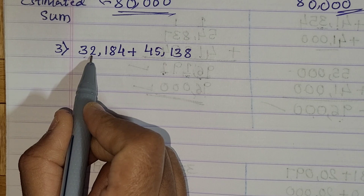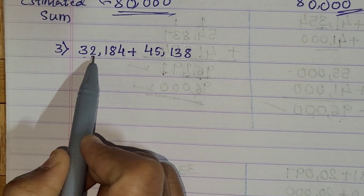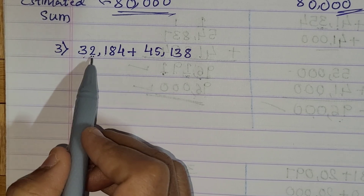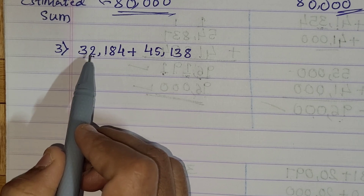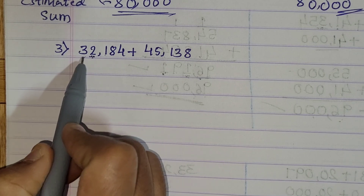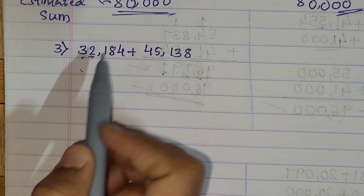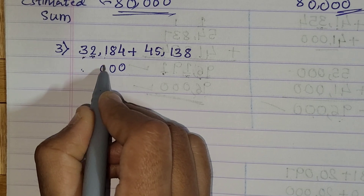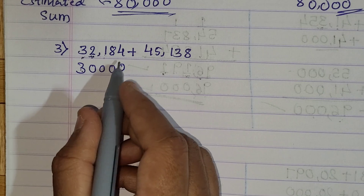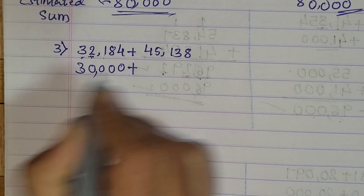Here, first we have to round off to the nearest ten thousand place. Replace unit, ten, hundred, and thousand by zero, and observe the number at the thousand place. If it is 1, 2, 3, or 4 then you keep the ten thousand digit unchanged. So: 0, 0, 0, 0 — and the ten thousand digit is 3 — let's put the comma, it becomes thirty thousand.